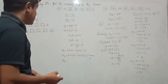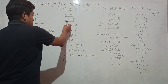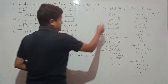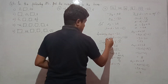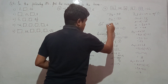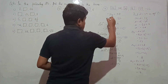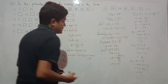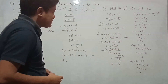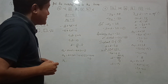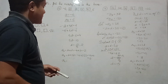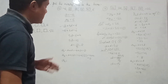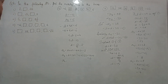Likewise you can keep solving. The technique is: when a2 or a6 or any term is given, open the formula for that term, set up a linear equation in two variables, and solve by the elimination method.